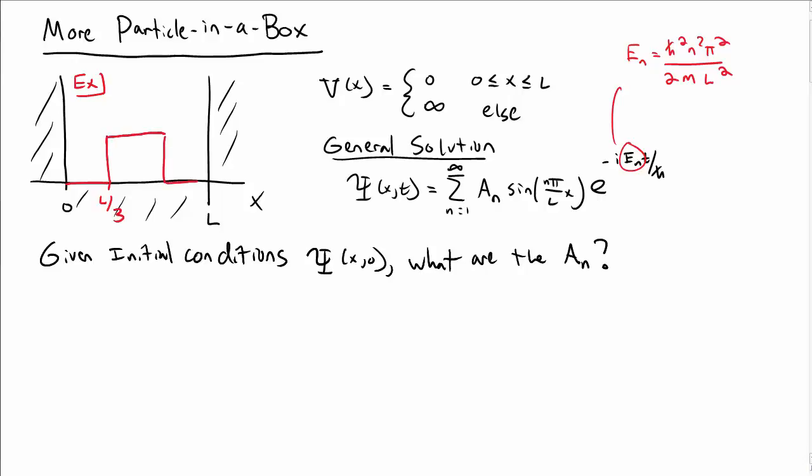Let's look at an example where the wave function is 0, except between L over 3 and 2L over 3. So in particular, if I write that as a piecewise defined function, it's some constant between L over 3 and 2L over 3 and 0 outside of that region. That's my initial condition for my wave function.